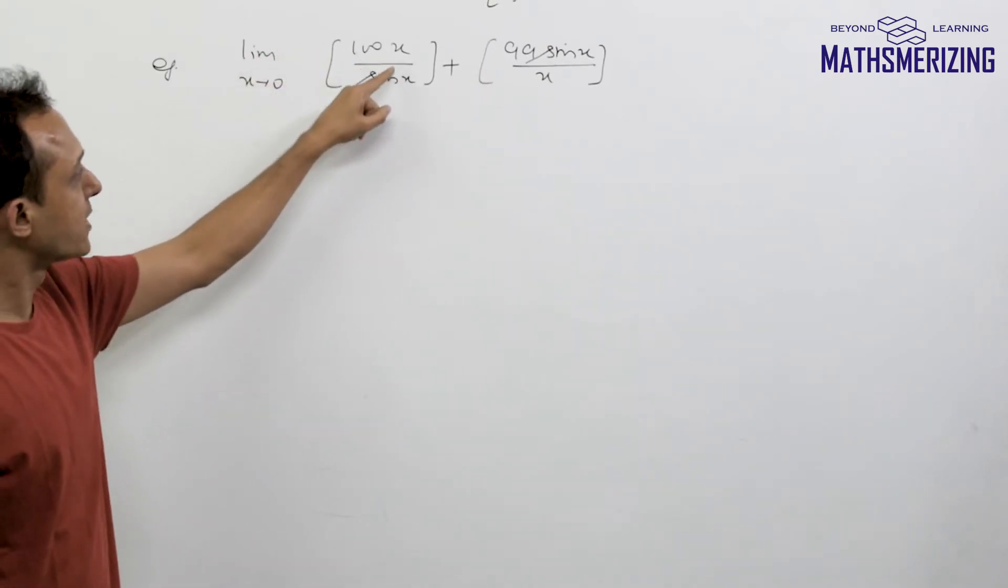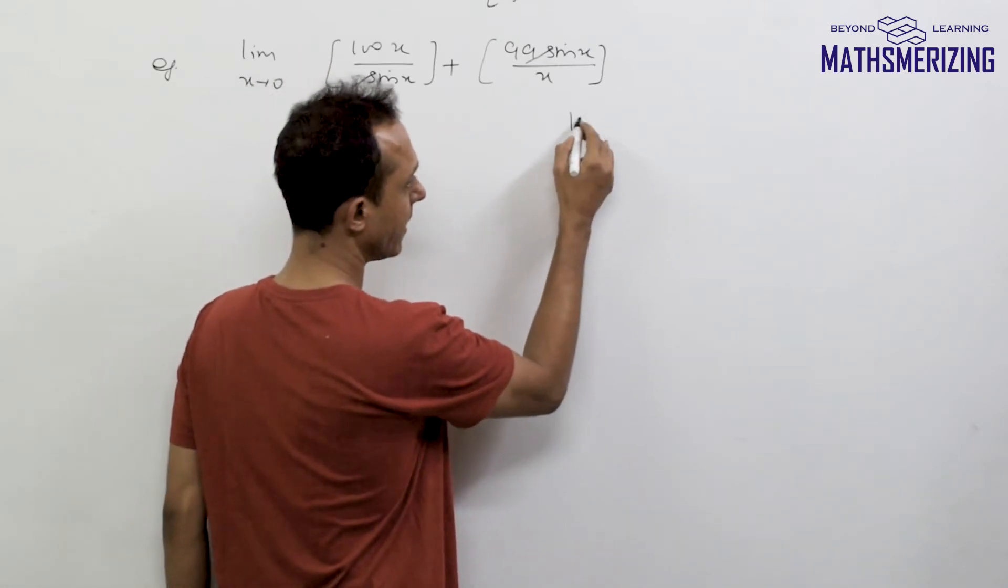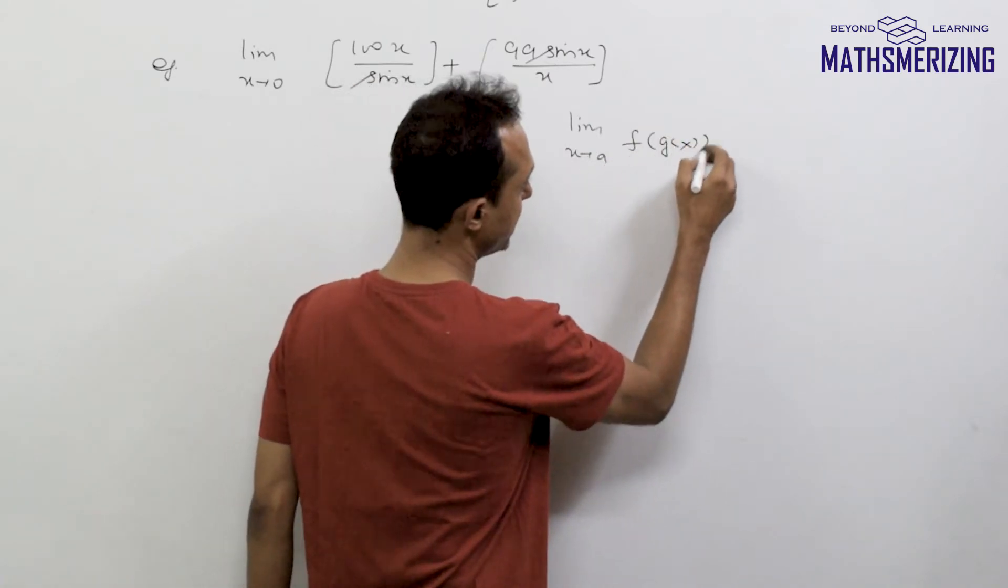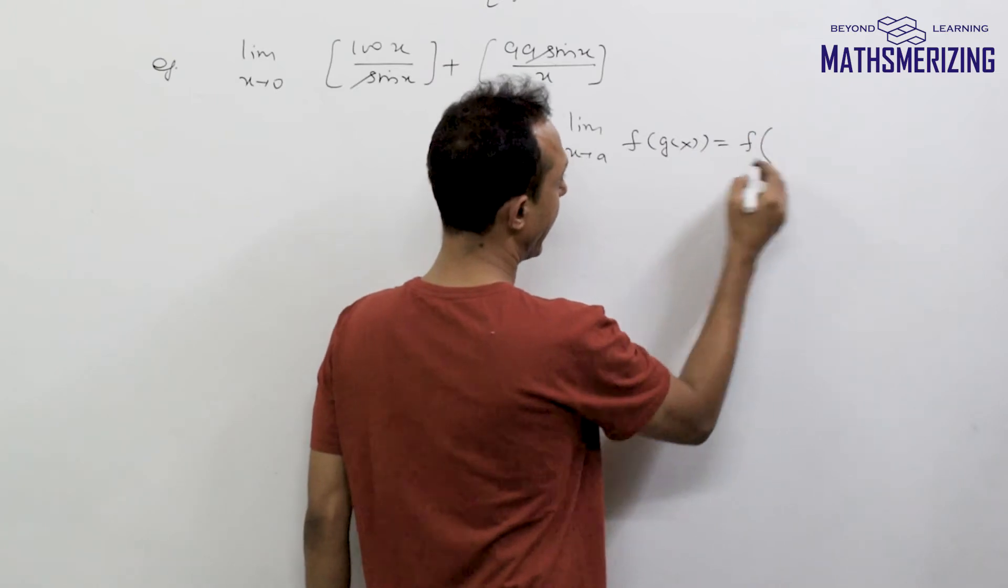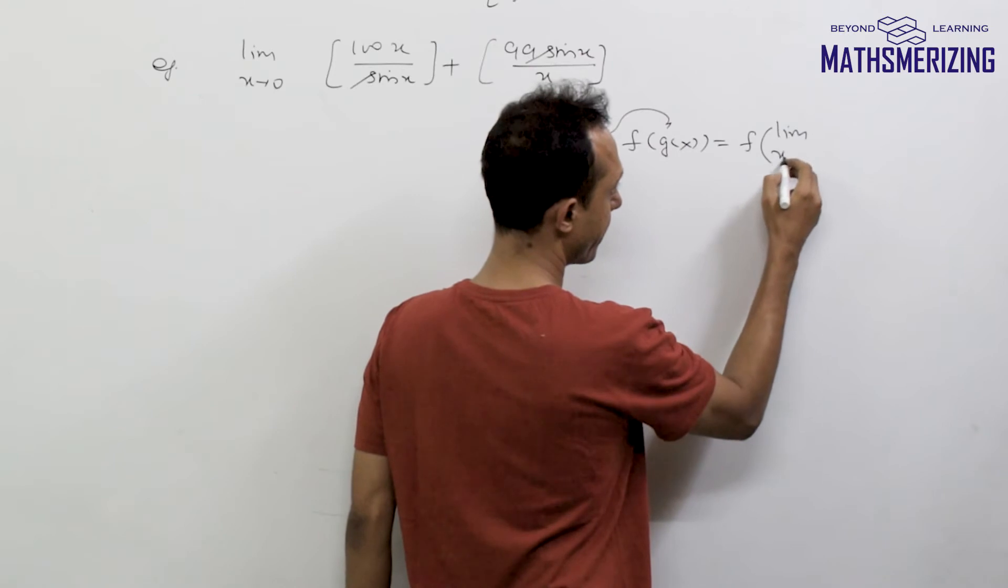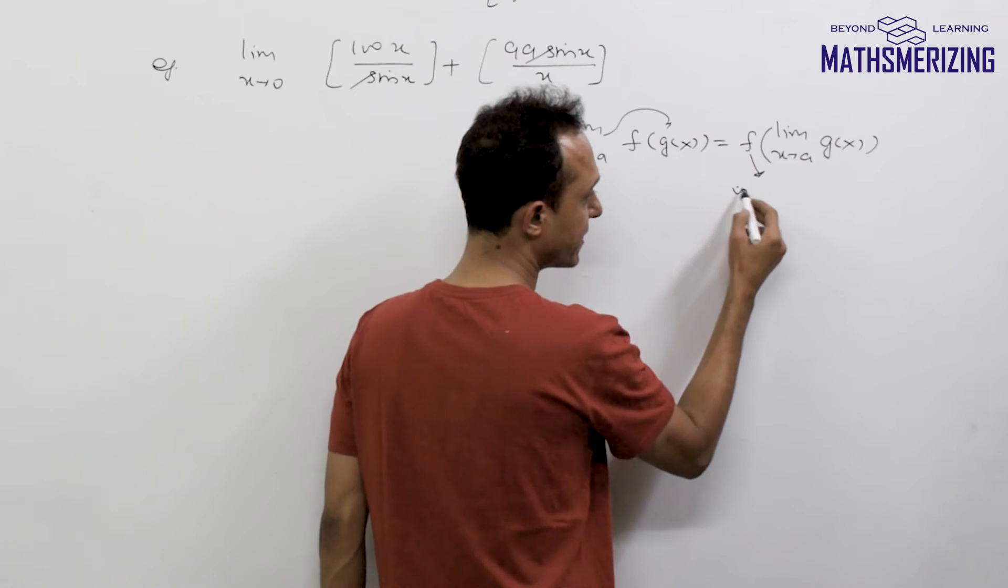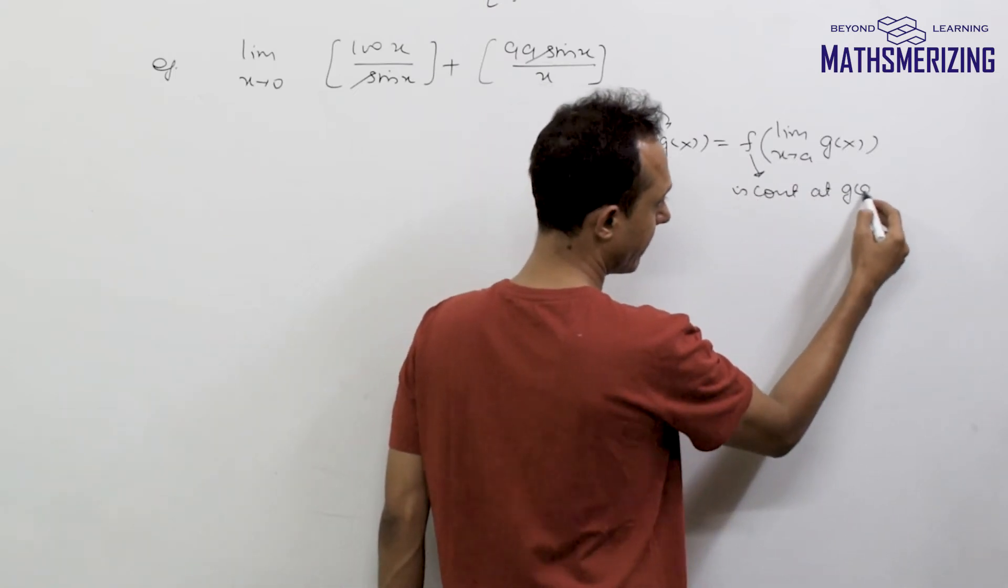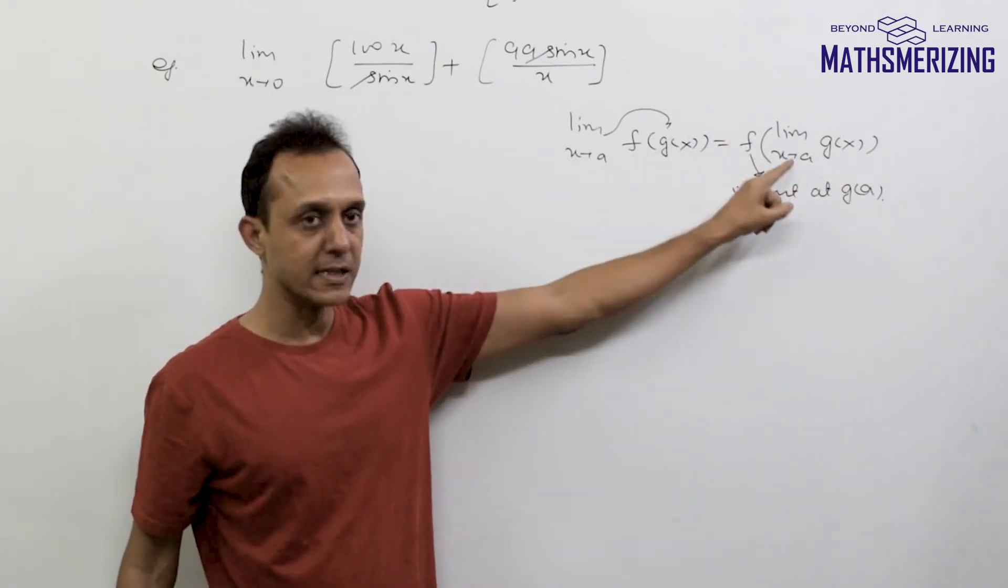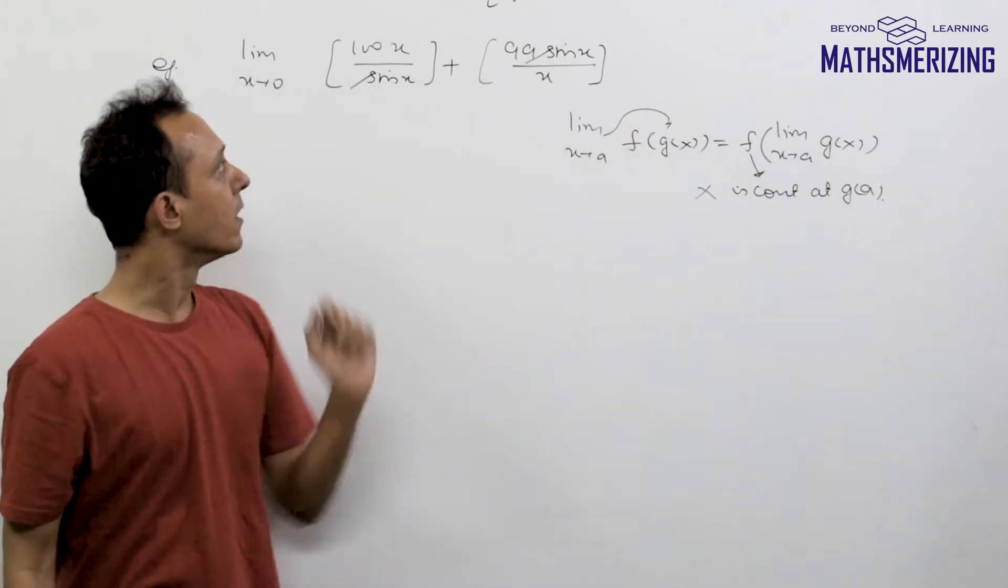I know that limit sin(x)/x is 1, so I cannot take this limit inside because if I have limit x tends to a of f(g(x)), I can take this limit inside the function only when function f is continuous at g(a). If f(x) is continuous at g(a), then I can take this limit inside; otherwise, these two expressions won't be equal.